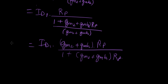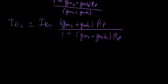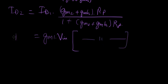ID1 times GM2 plus GMB2 times RP over one plus GM2 plus GMB2 times RP. Now what we have to do, this is ID2. What we did before was, the beginning of the problem was just replace ID1 with GM1 times Vin. So GM1 times Vin times this entire thing. And this is ID2.